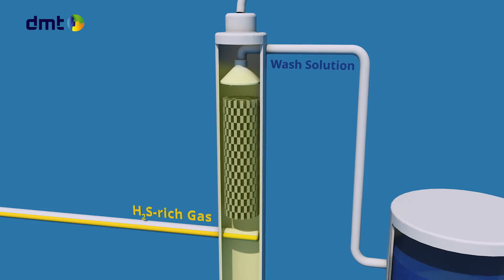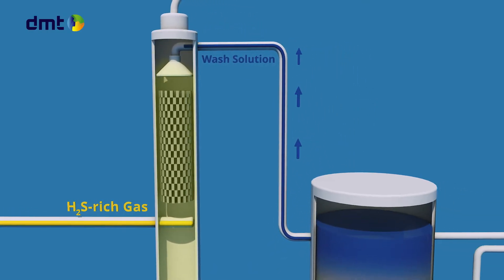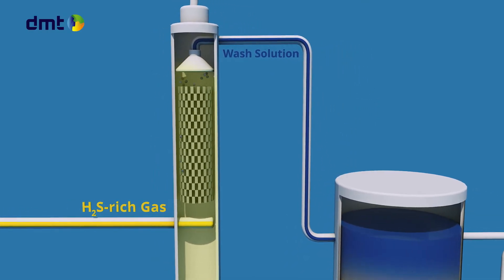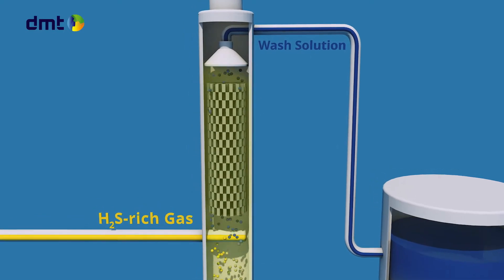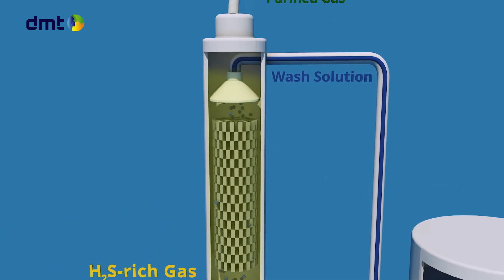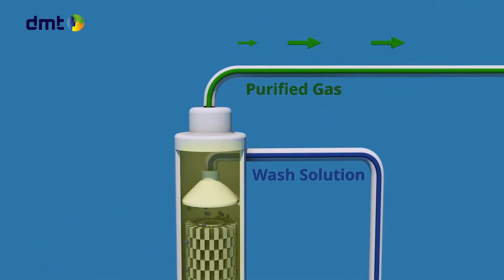Wash solution is pumped from the bioreactor to the top of the absorber and is sprayed over the packing to ensure contact between the solution and the gas. The purified gas flows upwards to the top of the absorber.